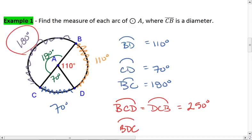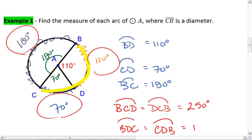We look at arc BDC. That's going from B to C by passing through D. We could also name that arc CDB. And this is going to be 70 plus 110, which is 180.